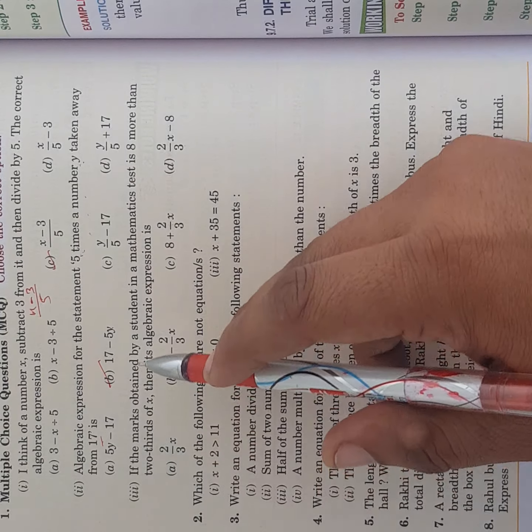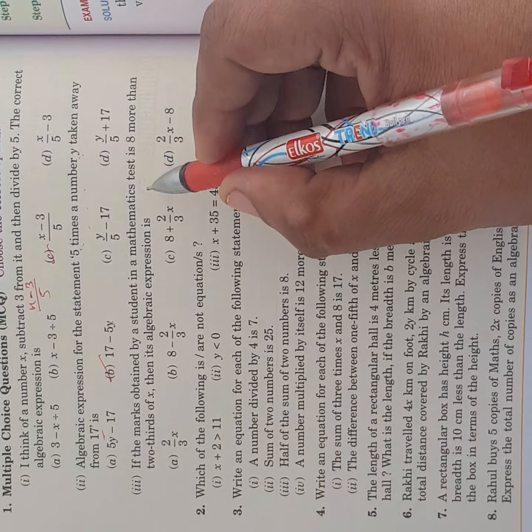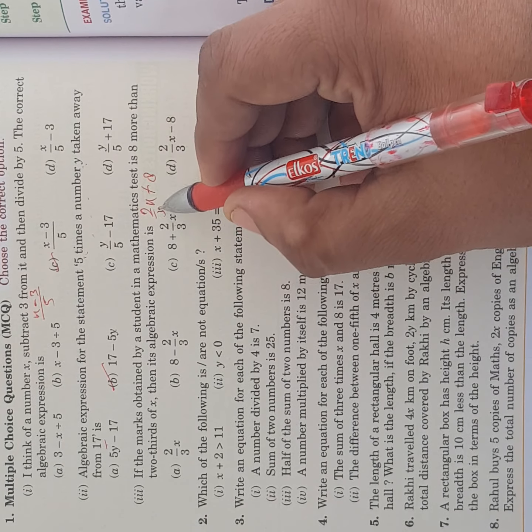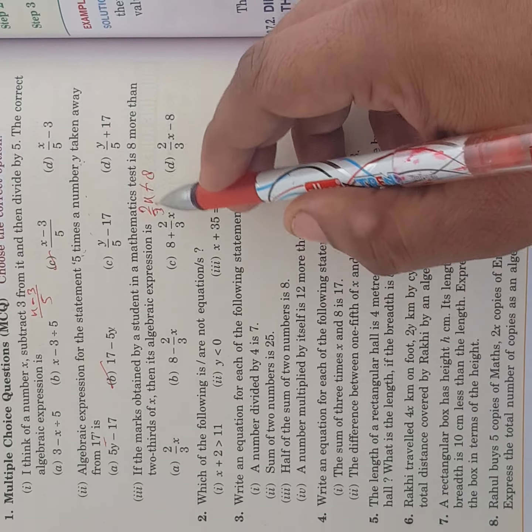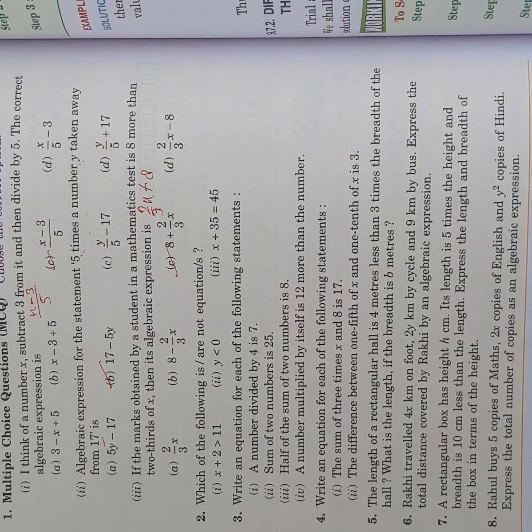Next, if the marks obtained by a student in a mathematics test is 8 more than 2 third of x. 8 more than 2 third of x. Of means multiply, 2x upon 3 plus 8. Yes this is the answer.